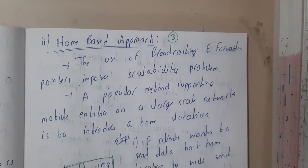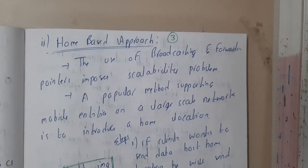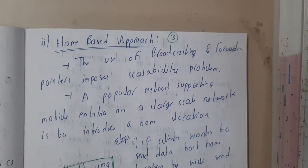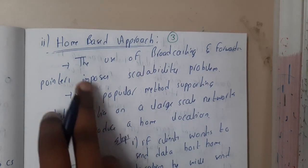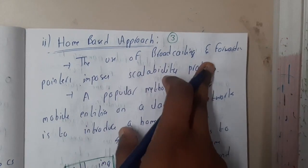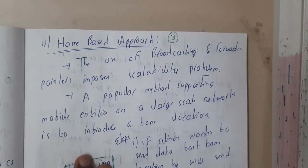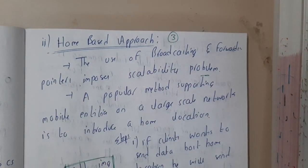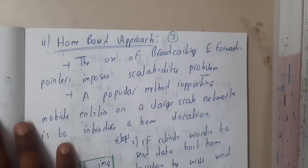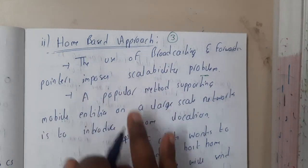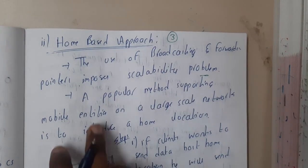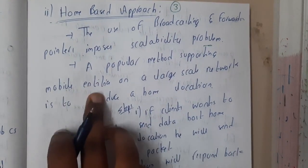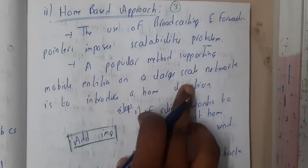Hello guys, we are back with our next lecture. In this lecture, let us go through the second approach, which is the home-based approach. The use of broadcasting or forwarding pointers imposes a scalability problem, so whenever the clients or devices are high, these previous approaches of broadcasting and multicasting will not be of good use. A popular method supporting mobile entities on a large-scale network is the home-based approach.